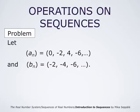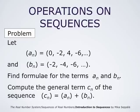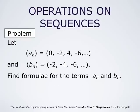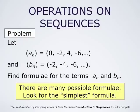The problem is: find a formula for the terms aₙ and bₙ first, and then compute the general term of the sequence cₙ = aₙ + bₙ. To find a formula for aₙ and bₙ, one should observe that there are many possible formulae and we are looking for the simplest. Of the sequence aₙ we only know the first four terms: 0, -2, 4, -6. And of the sequence bₙ we know only the three first terms. Clearly there are many expressions producing these terms, but we look for a simple one.